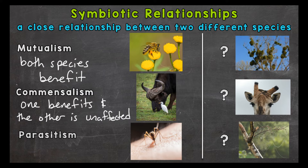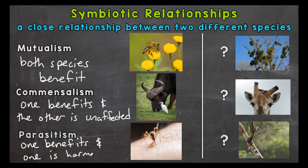And lastly we have parasitism. In this relationship one species benefits and the other is harmed. For our example we have a mosquito and a human. The mosquito benefits by sucking blood — female mosquitoes are the ones that suck the blood. They use the nutrition from the blood in order to make eggs. Male mosquitoes eat plant nectar. So in this relationship between the female mosquito and the human, the human is harmed — they're having their blood sucked and mosquitoes can also transmit diseases. So this has a negative impact on the host species. That's our example of parasitism.